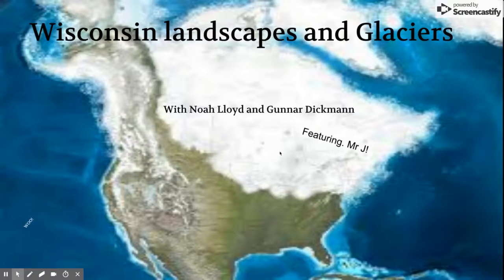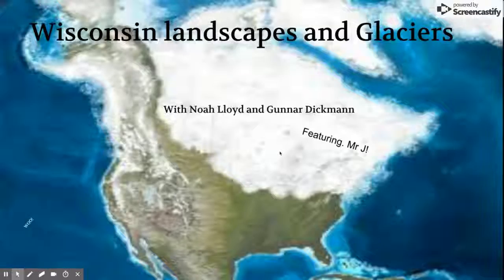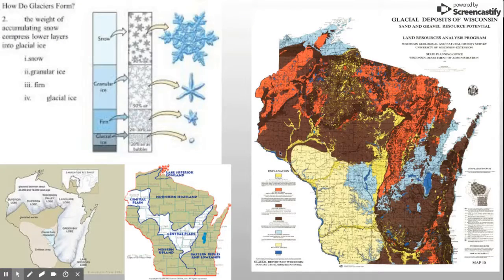How Glaciers Form the Wisconsin Landscape. Glaciers are big sheets of ice formed by compacted powdered snow, layered miles high due to the frigid temperatures of the Cenozoic Period.